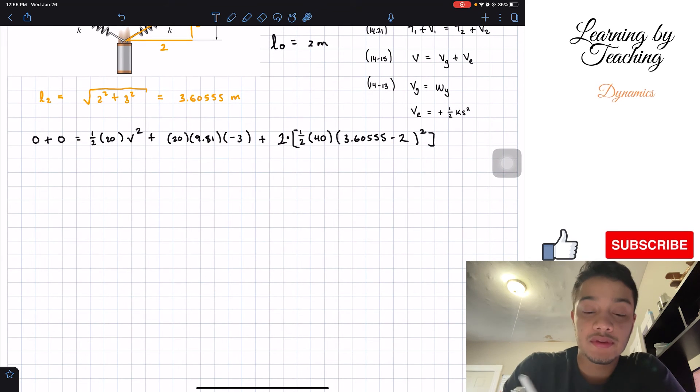If we do that, let's start solving our problem. We have on the left side, zero plus zero will give me zero. Then we will have one half times 20, that gives me 10 V squared plus. We're going to multiply these numbers. So 20 times 9.81 times negative three will give me a total of negative 588.6.